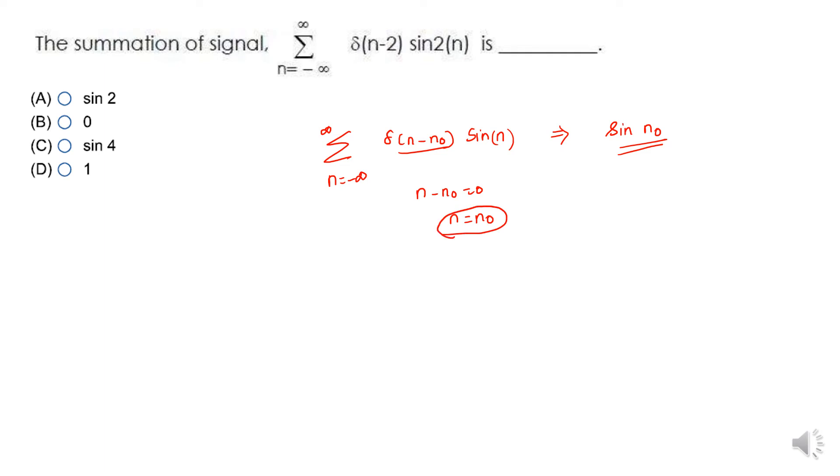It is replaced by n0. In a similar manner, n minus 2 equals 0, so n equals 2, and n is replaced by 2. Therefore, sin(2n) becomes sin(2 times 2), that is equal to sin(4). Sin(4) is the correct answer.